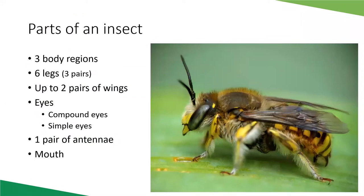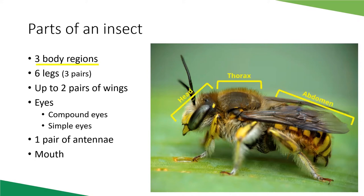To start, we need to identify the different parts of an insect used for identification. This also helps us determine if something is actually an insect. Insects have three body regions: head, thorax, and abdomen. Arthropods like spiders only have two body parts. Insects have six legs — three pairs — whereas spiders have eight legs and centipedes and millipedes have dozens of legs.